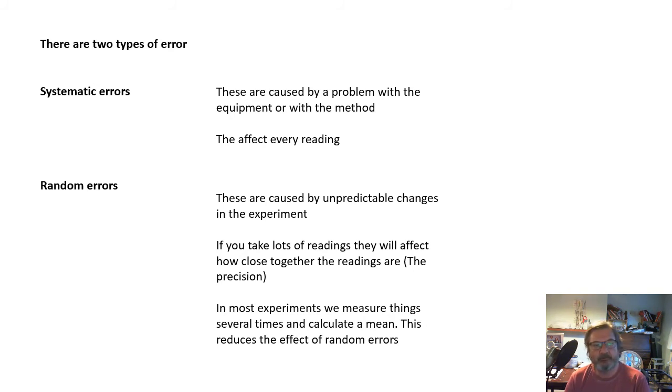What we can do is we can minimize the effect of random errors, and we do that by taking repeat readings. This is why we do the experiment twice or three times and then take an average. And what we're doing is we are minimizing the effect of random errors. For example, if I do it three times and I get eight, eight, and ten, and then take an average, well the average will be closer to eight than it will be to ten.